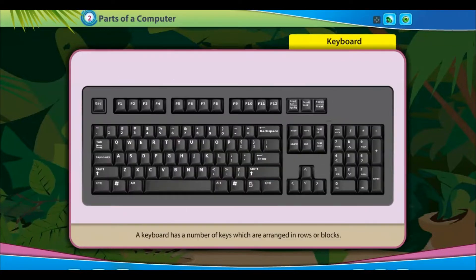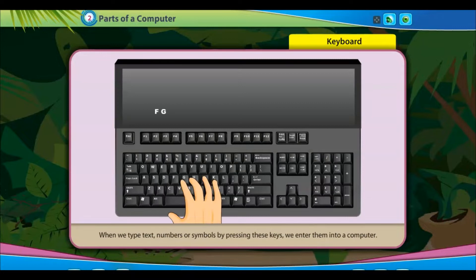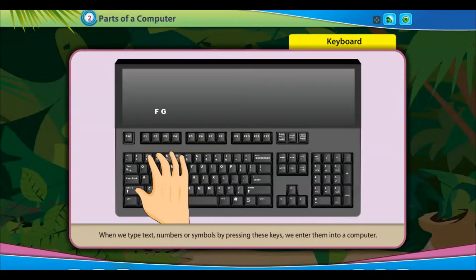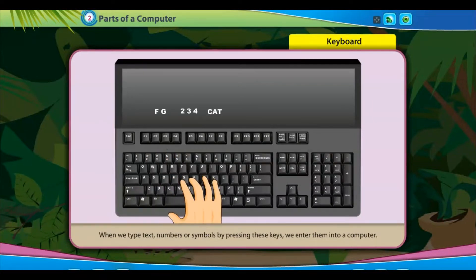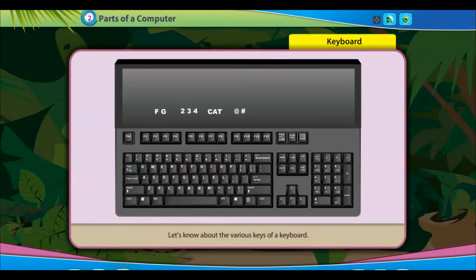A keyboard has a number of keys which are arranged in rows or blocks. When we type text, numbers or symbols by pressing these keys, we enter them into a computer. Let's know about the various keys of a keyboard.